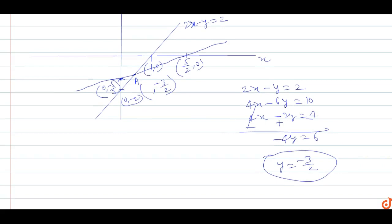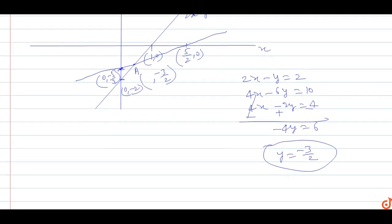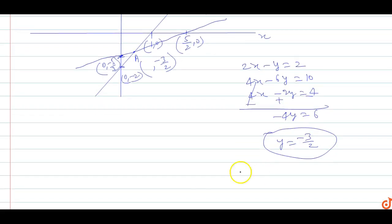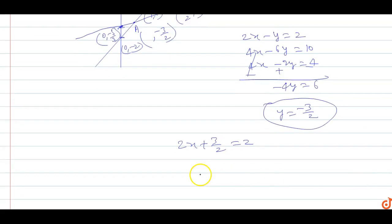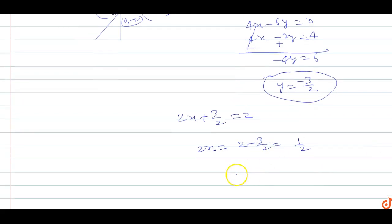Putting the value of y equals minus 3/2 into Equation 1: 2x minus (minus 3/2) equals 2, so 2x plus 3/2 equals 2, giving x equals 1/4.